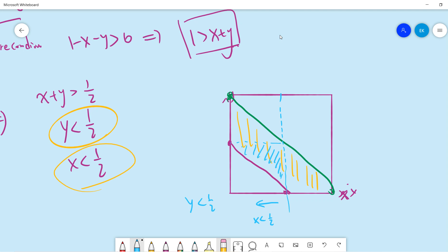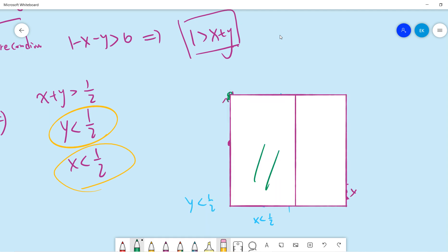So this is x less than half and this is y less than half, so this is the region. So the probability basically is the area of this clear blue region divided by this whole green region.